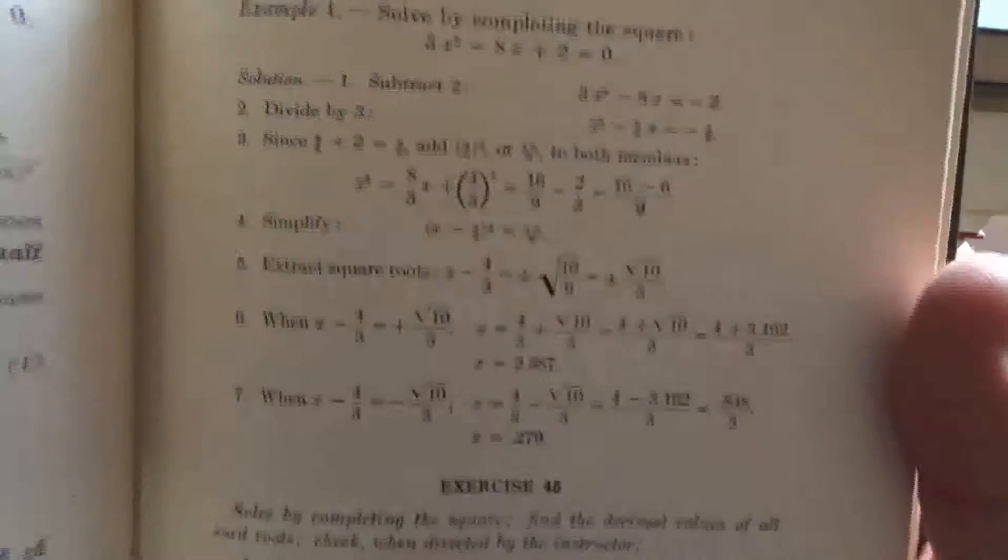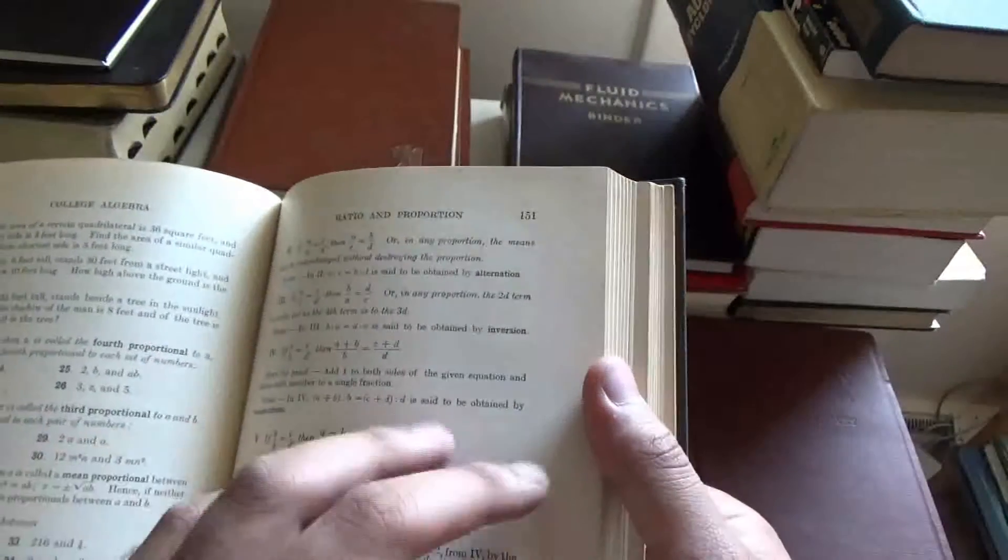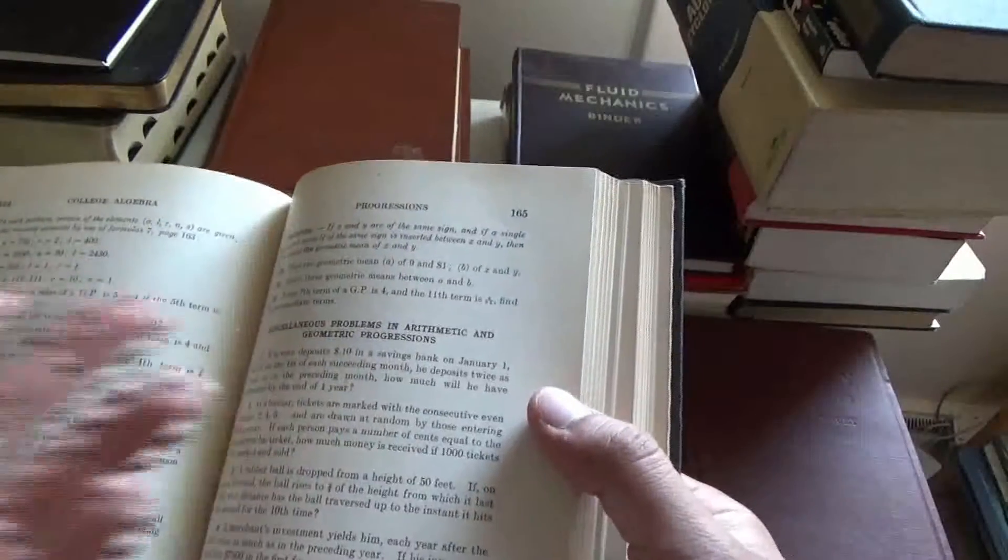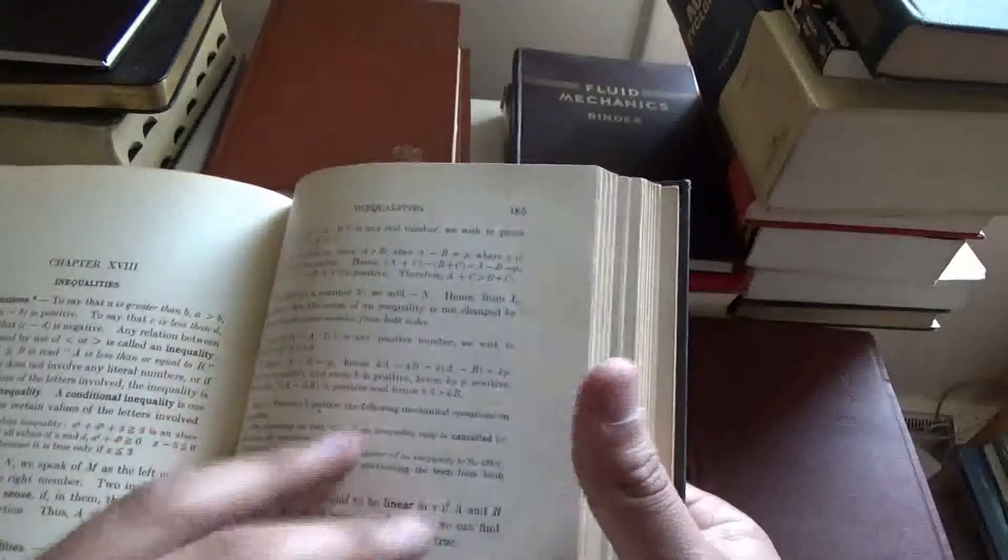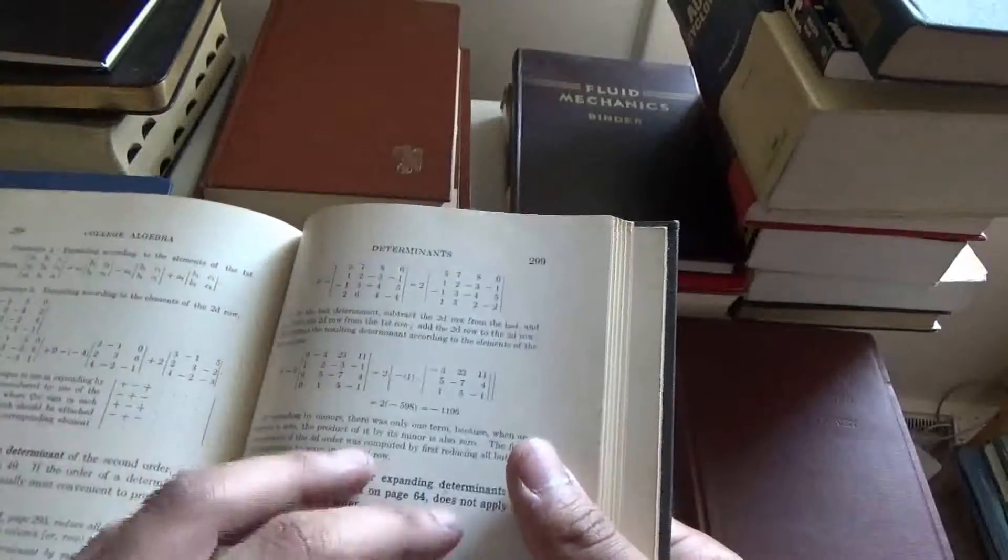Nowadays, we call it Algebra 2, and we learn it in junior high or high school, like early high school. Ratio and Proportion, Progressions. I guess they mean series here. Binomial Theorem, Inequalities, Complex Numbers. Yeah, so they've got everything down in here. Permutations, Combinations, Probability, Determinants. They even got some matrices in here. Nice. Well, there you go. College Algebra.